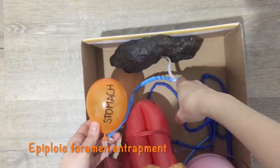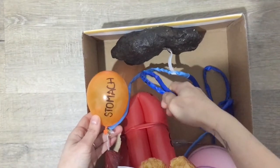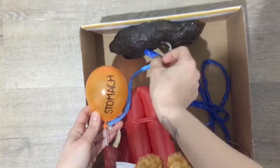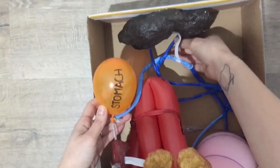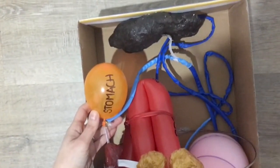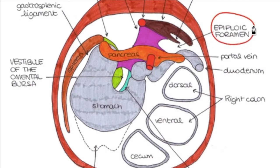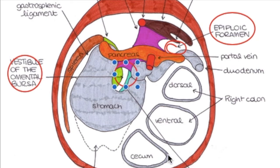With epiploic foramen entrapment, a segment of small intestine moves into the epiploic foramen and remains entrapped. This happens especially in older horses, and this is a little bit more difficult to explain with this model as the stomach balloon doesn't really have the same shape as the real stomach, so I'll show you with this drawing. Actually, the intestine doesn't really enter directly into the epiploic foramen, but instead it passes through the vestibule of the omental bursa, which is delimited by the gastrosplenic and the hepatogastric ligaments, pancreas, and lesser curvature of the stomach.